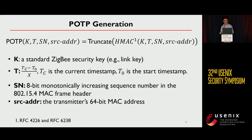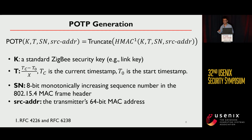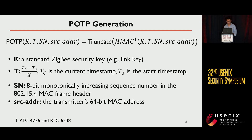Here is how to generate the POTP. We use a standard Zigbee secure key, such as the link key, along with a timestamp, sequence number, and the MAC address of the transmitter to generate the POTP using an existing HMAC-based, time-based one-time password generation algorithm.